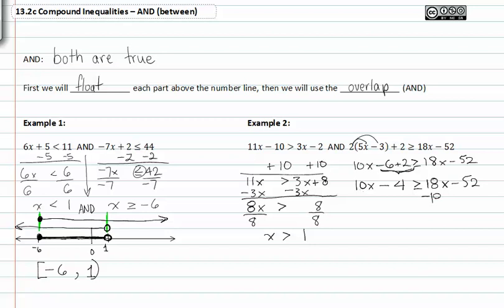Subtract 18x from both sides and add 4 to both sides and we get -8x is greater than or equal to -48. Divide by -8 on both sides and we get x is less than or equal to 6.